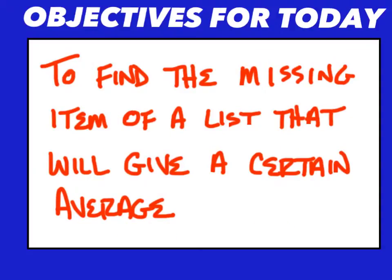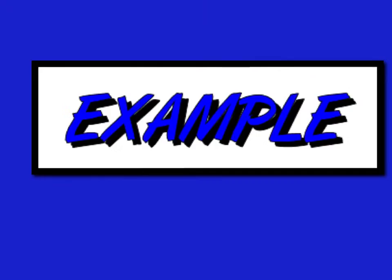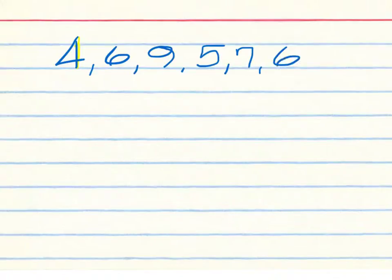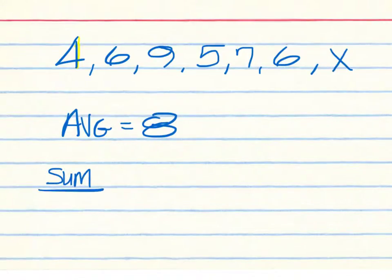To find the missing item of a list that will give a certain average. For example, let's say we have 4, 6, 9, 5, 7, and 6, but we have a missing number X. The average that we're shooting for is 8. So let's say we're playing a game, and at the end of the game we want our average score to be 8. We've already scored a 4, 6, 9, 5, 7, and 6, but we still have one turn to go, and we need to know what we must score to have an average of at least 8. Don't forget that to find average, you divide the sum by the number of numbers, and that comes out to be the average.